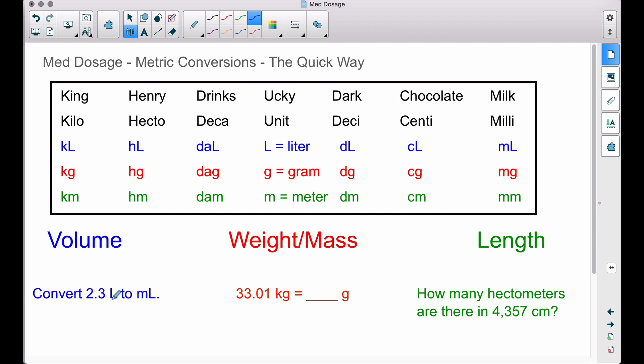2.3 liters—we want to convert 2.3 liters to milliliters. So I'm going to write down 2.3, that's what we have, and we have liters so we are right here. We want to convert this to milliliters. Well milli is way over here.